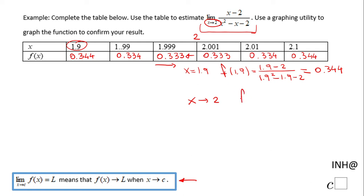Whenever we go from this left side we call it 2 minus. Whenever we go from this side close to 2, values greater than 2, we call it 2 plus. The function also goes closer to this 0.333.